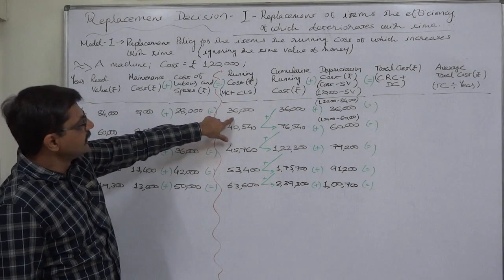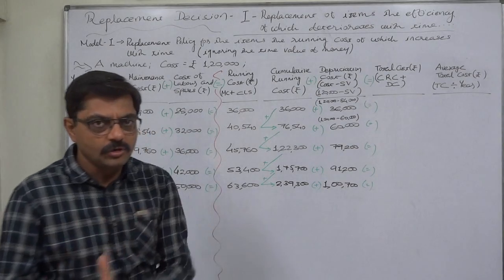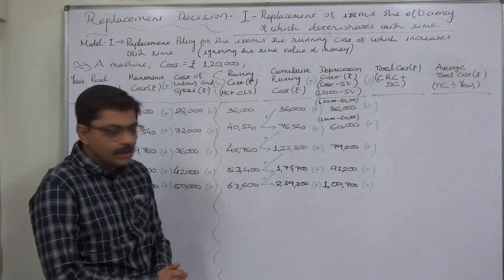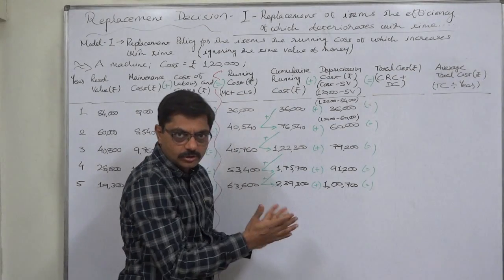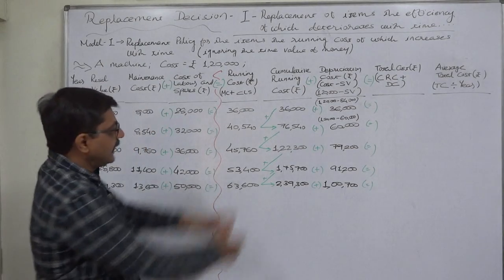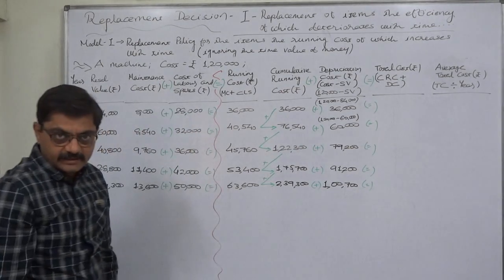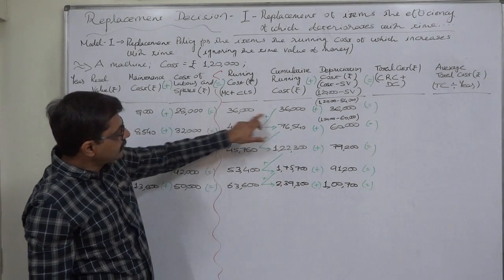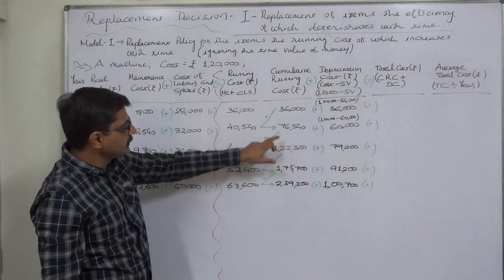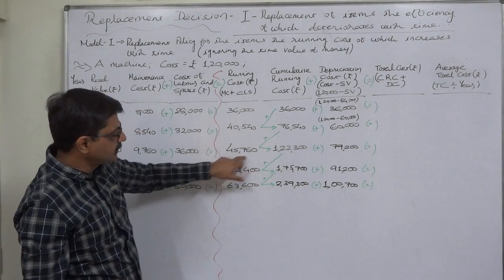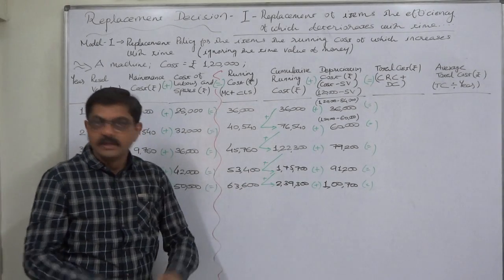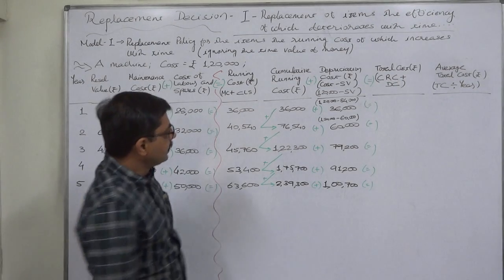We already discussed the solution process. First, we find the cumulative running cost - you can write this year by year. The cumulative running cost for the first year remains the same; first year plus second year gives the total cost of two years, adding the third year gives total for three years, and so on up to five years - just like cumulative frequency.